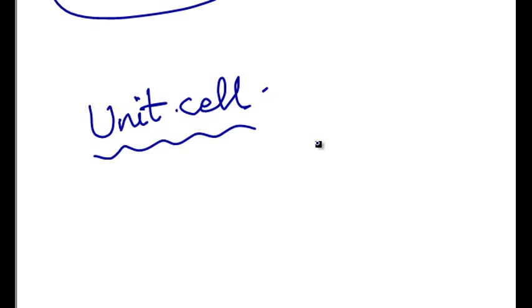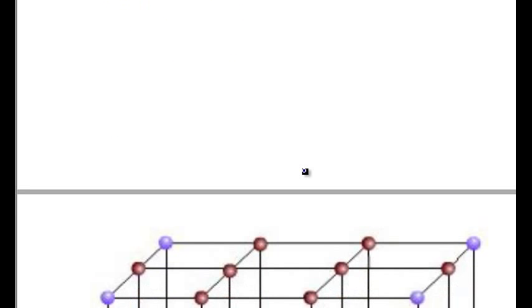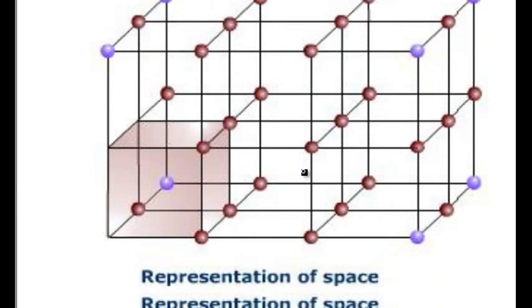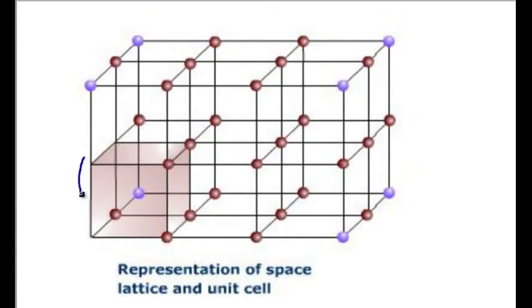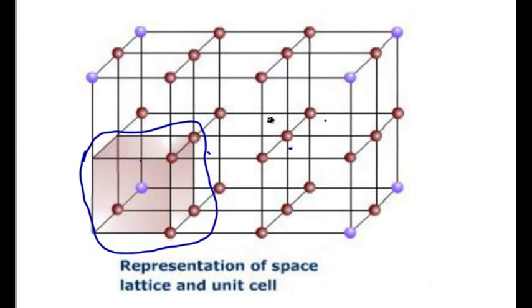Now let us see one of the representations of the Unit Cell and the Space Lattice. In this diagram, this portion of the Space Lattice represents the Unit Cell and the repetition of this Unit Cell forms a Space Lattice and the repetition of such Space Lattice forms the entire Crystal.